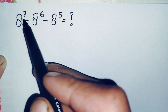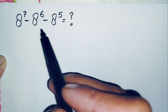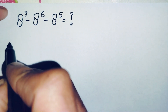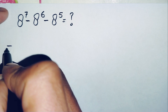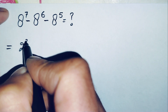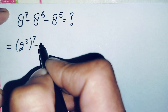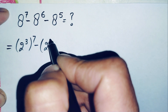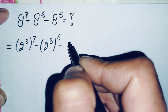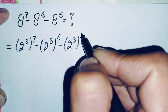Multiplying that number of times when the power is small is very simple. So here we will change all the bases to exponential form having 2 in the base. Therefore we can write 8 as 2 raised to power 3, so we get: (2^3)^7 minus (2^3)^6 minus (2^3)^5.